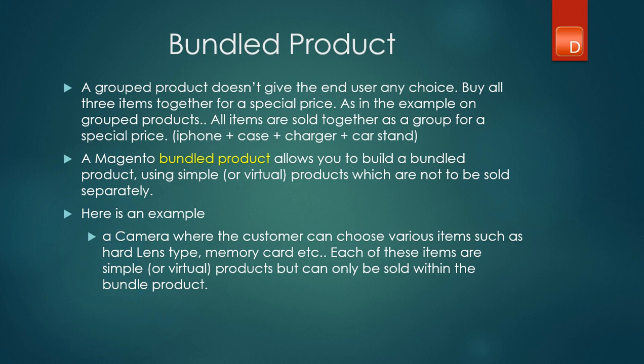Grouped products and bundle products are a little bit different. A grouped product doesn't give the user the ability to buy things separately — you're basically saying buy all of these and I'll give you a discount. A bundle product is different. The best example is buying a desktop computer. When you're buying a desktop computer, you can say you want 2.1 gigahertz of speed, 4 gigs of RAM, a 500 gigabyte disk, and a 32 gig video card. All of this is included in a bundle product — that's exactly what a bundle product is.